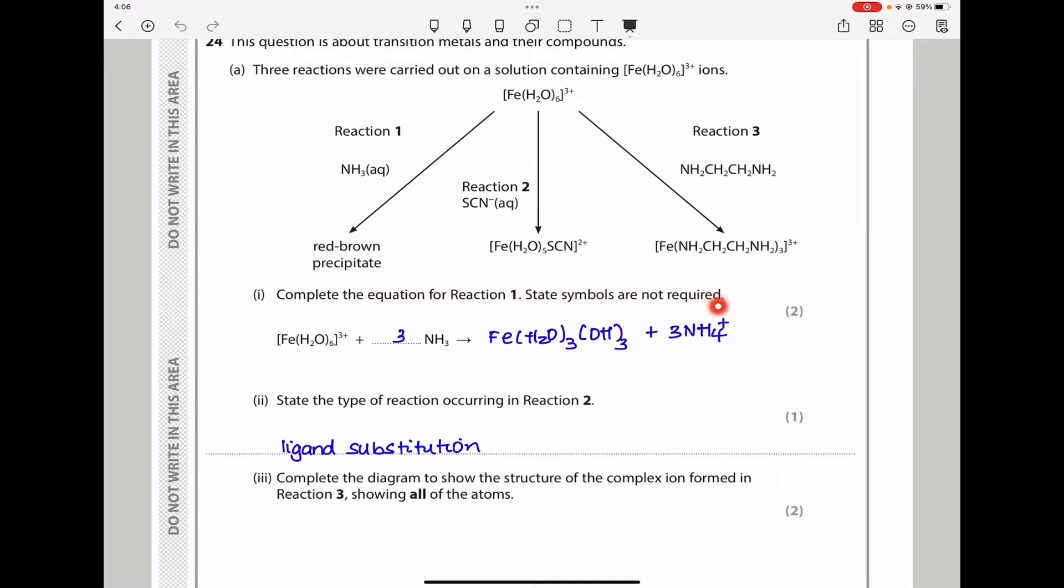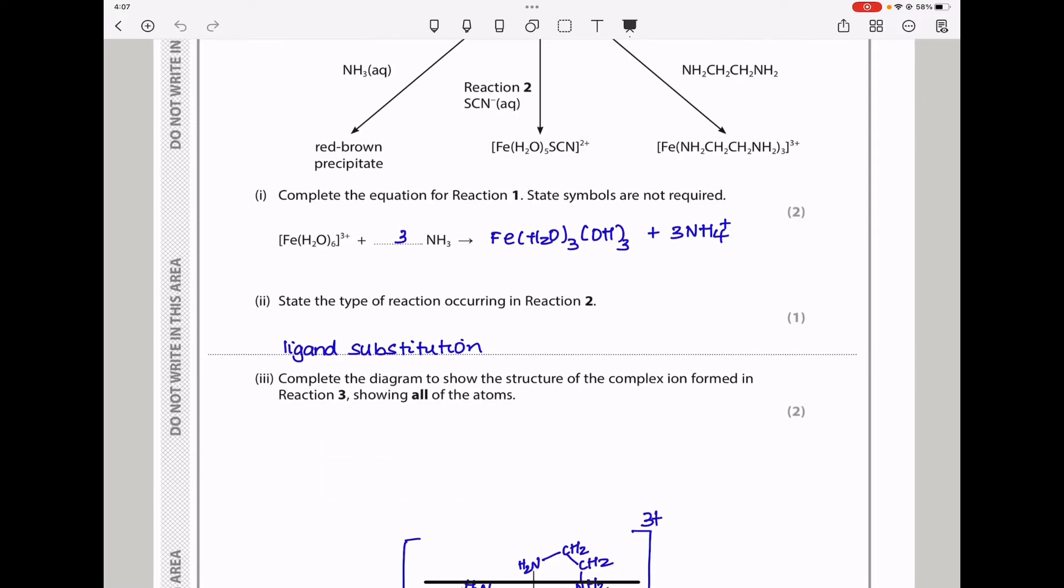State symbols are not required. If a red-brown precipitate was formed, this is going to be a deprotonation reaction. Three ammonias must have been used because this is 3-plus to produce this compound here, which is going to be the red-brown precipitate. It's a solid.